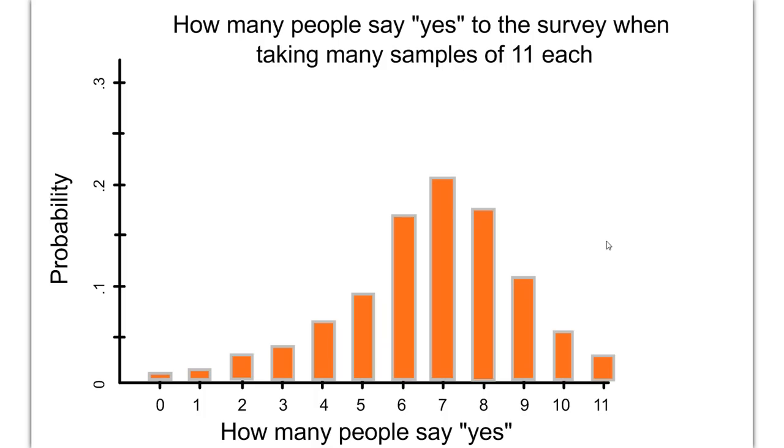So the way we're assuming this is set up here is there's a large room full of people, and I want to take samples of 11 people at a time. And out of my 11 randomly chosen people in an SRS, I'm going to see how many said yes.